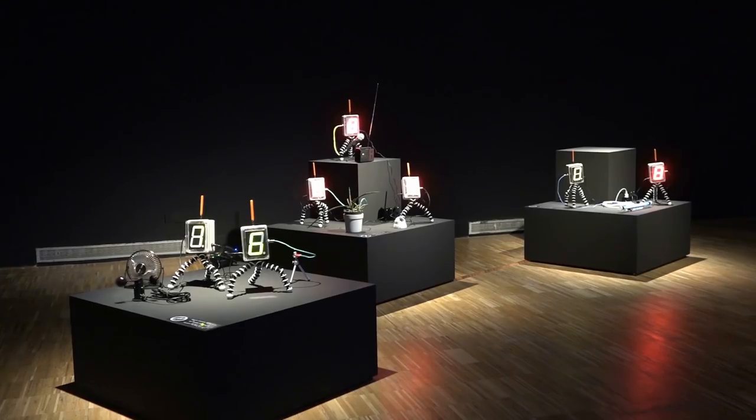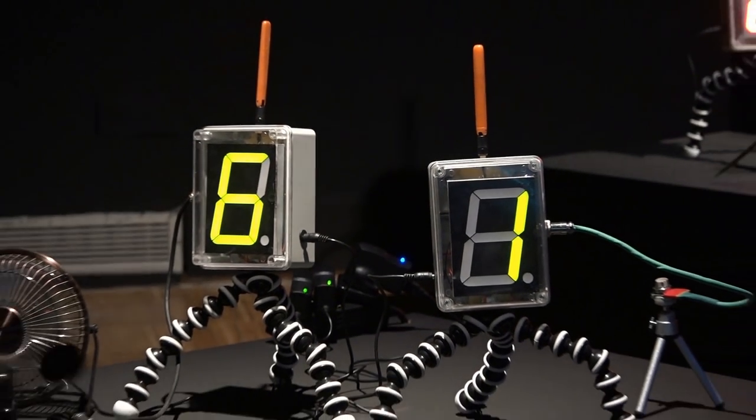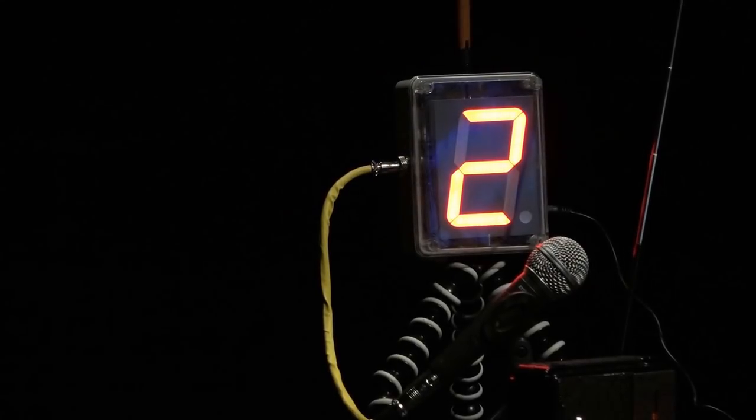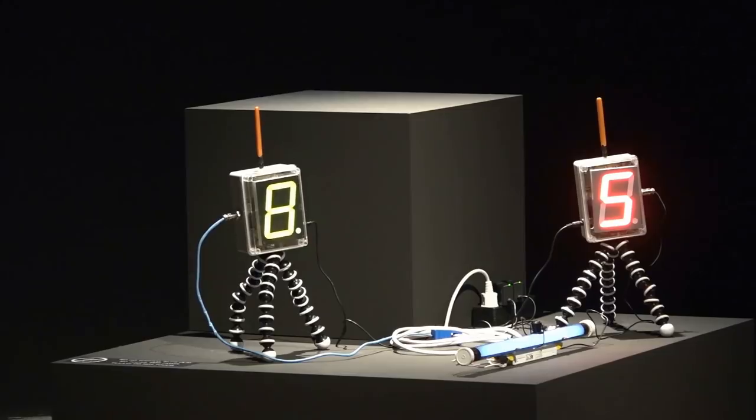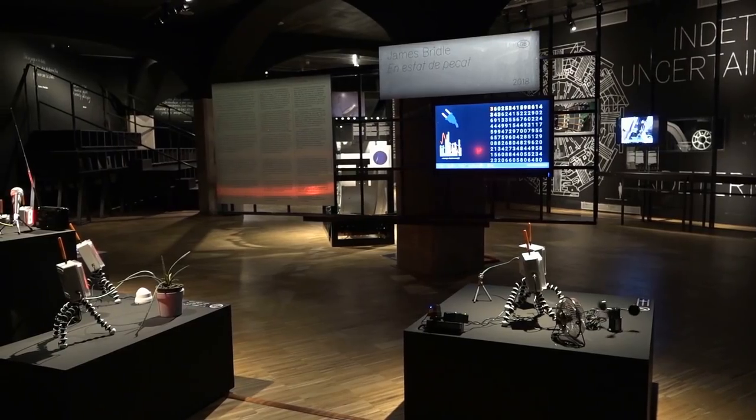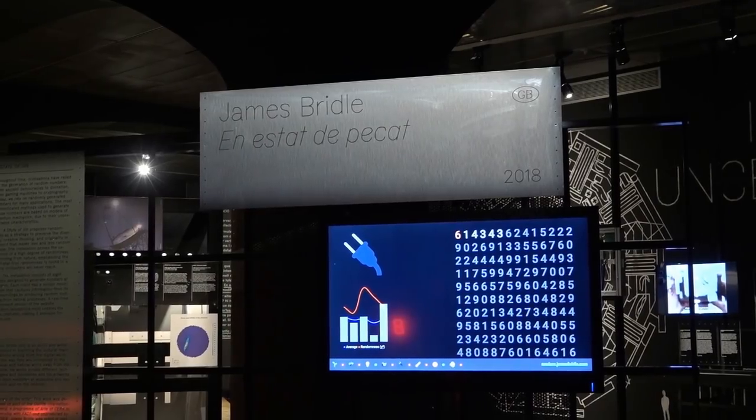A piece I find somewhat easier to interpret is this collection of number displays by James Briddle. Each of these numbers is generated by evaluating some local input, like the temperature, sound, humidity, light, and so on. The artist wants you to think about what is random and what not, and if we really know the difference.